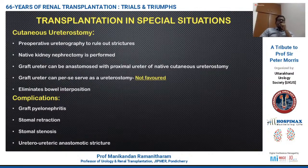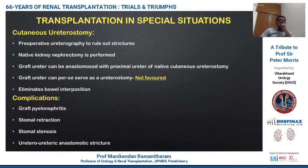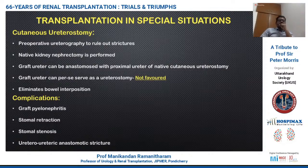Another group is patients who have a cutaneous ureterostomy pre-operatively. In these patients, it is imperative to obtain pre-operative urethrography to assess the ureterostomy, and at transplant, native kidney nephrectomy is performed with graft ureter anastomosed to the proximal end of the existing cutaneous ureterostomy without disturbing it. Some surgeons suggest using the graft ureter itself as a cutaneous ureterostomy, but this is associated with more complications and is not usually preferred. The advantage of cutaneous ureterostomy is that it eliminates bowel interposition and its associated complications.